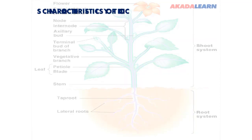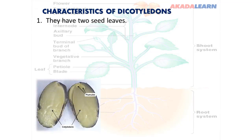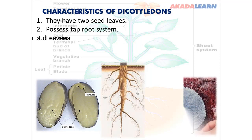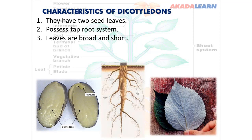Characteristics of dicotyledons: they have two seed leaves. They possess a tap root system — in monocots the roots are fibrous, but in dicots they are tap root system. Tap root system has a definite main root with secondary roots attached to it, whereas fibrous root systems have no definite main root. The leaves are broad and short, unlike monocots where the leaves are long and narrow.